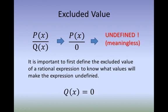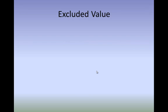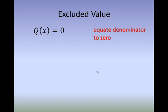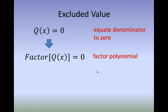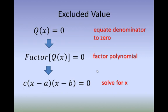Remember, for you to find the excluded values, the denominator, or Q of X, should be equal to 0. So let's equate the denominator to 0 first. Then, either we can factor Q of X to derive a factored form. Then let's solve for X. X should not be equal to A and B.